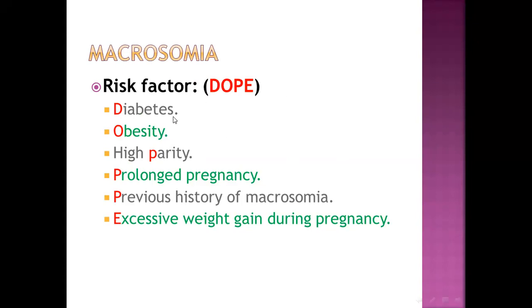D stands for diabetes — gestational diabetes or pre-gestational diabetes. O stands for obesity — maternal obesity is one risk factor for macrosomia. The third letter is B, which covers three things: high parity, prolonged or post-term pregnancy, and previous history of macrosomia.